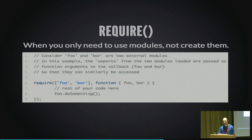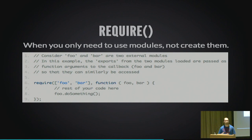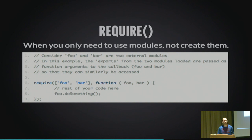Then we have `require`. It's very simple — you use it when you just want to use modules, not create one. Use `define` when creating a reusable module that returns something; use `require` when you just want to use modules without returning anything. For example, `require(['foo', 'bar'], function(foo, bar){...})` simply uses foo and bar when they're available.